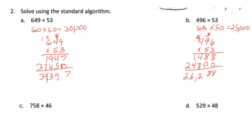Our next one, let's go ahead and do our estimation. 758 is close to 800. 46 is closer to 50. And I know 8 times 5 is 40 and I have three zeros, so we should be looking for an answer close to 40,000.